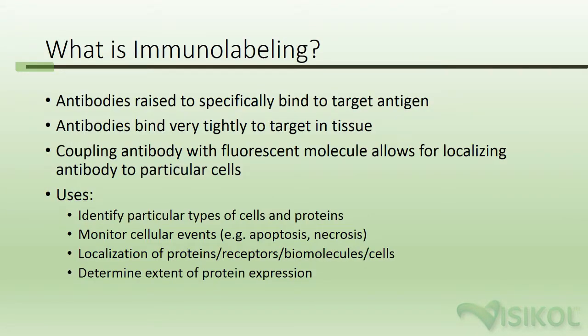What is immunolabeling? Immunolabeling takes advantage of antibodies raised specifically to bind to a target antigen. Antibodies bind very tightly to the target in the tissue, and coupling with a fluorescent molecule allows you to localize the antibody in particular cells. This is used to identify particular types of cells and proteins, to monitor cellular events such as apoptosis or necrosis, to localize proteins, receptors, biomolecules, and cells within tissue, and to determine the extent of protein expression.